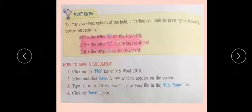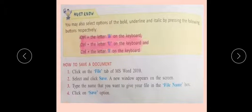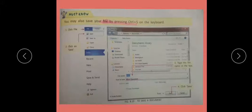Now, how to save a document. Whether you have prepared some document, you can save it. The shortcut is Control+S. To save using steps: click on the File tab of MS Word 2010, select and click Save. A new window appears on the screen. Type the name you want to give your file in the file name box, then click the Save option. Your document will be saved.